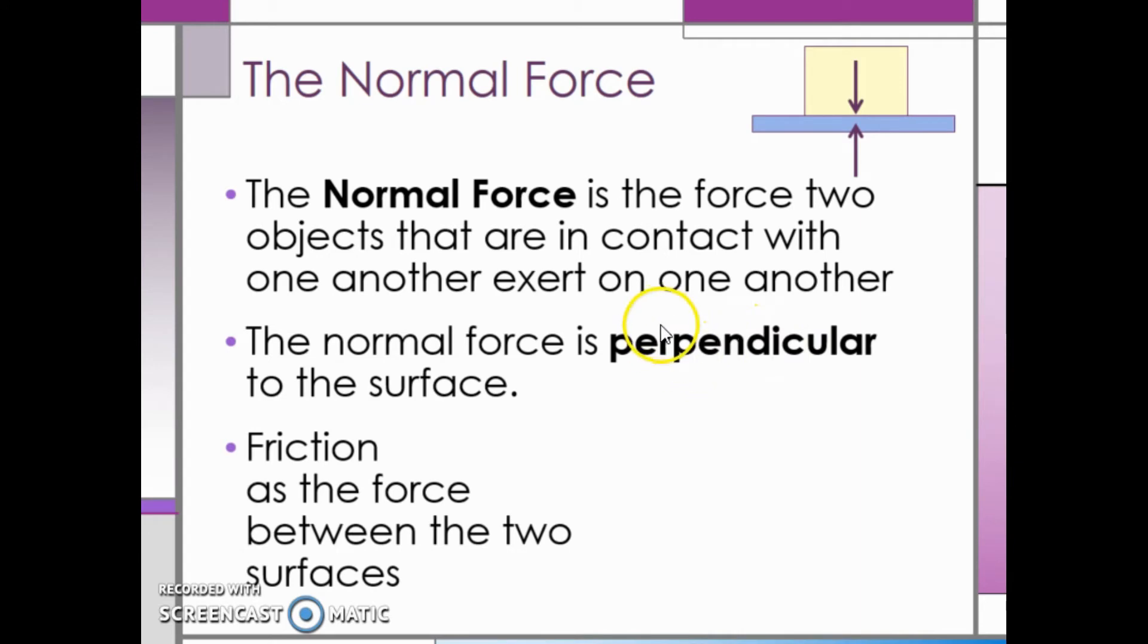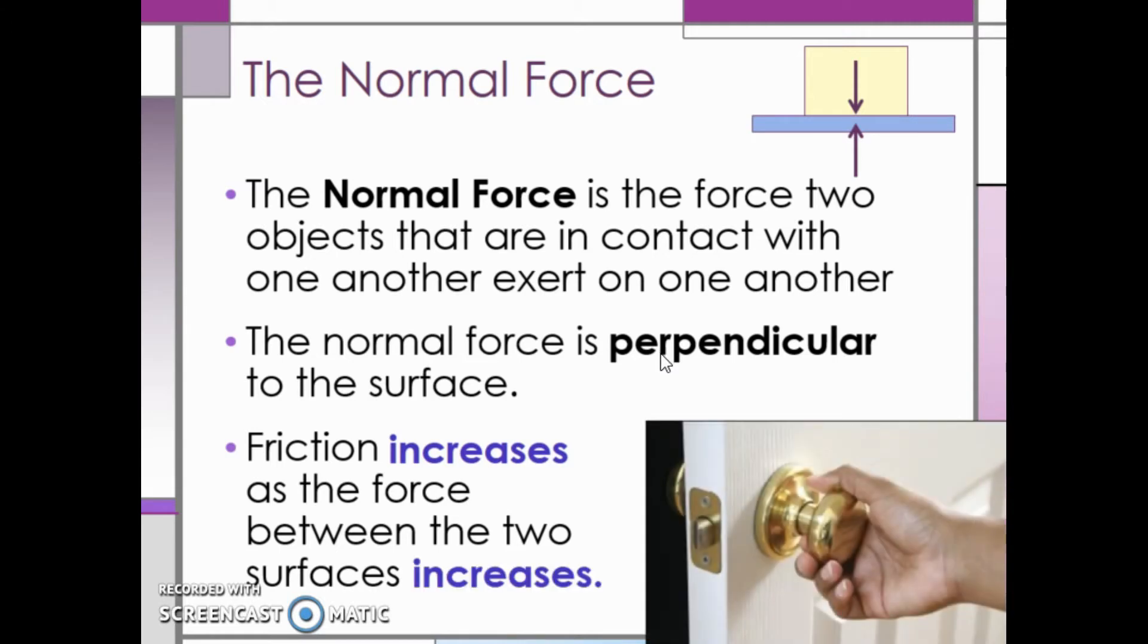If we have someone holding a doorknob, for example, the friction between your hand and the doorknob will increase as the force between the two surfaces increases. In other words, if you grab the doorknob loosely, you can't turn it to open it. As you apply more force to the knob or grip it tighter, friction causes your hand to catch on the knob and be able to turn it. Essentially, the more friction you have, the easier it is to turn the knob. What if we had oil or lotion on our hands? No matter how tight you grip the doorknob, you can't turn it. This is because the oil or lotion acts as a lubricant and decreases the frictional force between your hand and the knob.